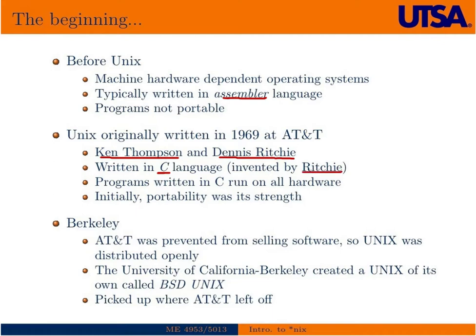In the early 70s, they rewrote Unix in C in order to be portable, such that the applications written for the operating system — or the operating system itself, rather — could run on all hardware. Initially, portability was its strength.